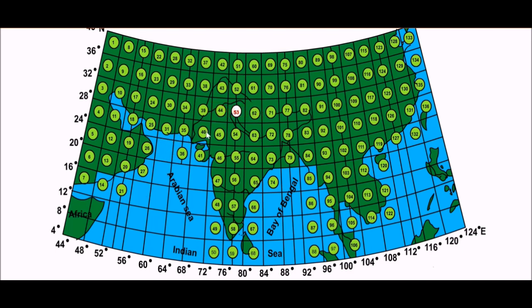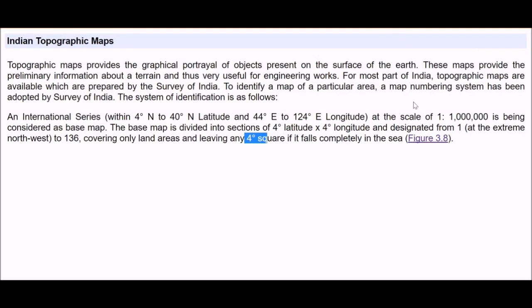We have just omitted those numbers which fall under the sea. Let me reiterate that the international series is 4 degree to 40 degree north latitude and 44 to 124 longitude. This is latitude, this is longitude, 44 to 124 degree and the scale is 1 is to 10 to the power 6.